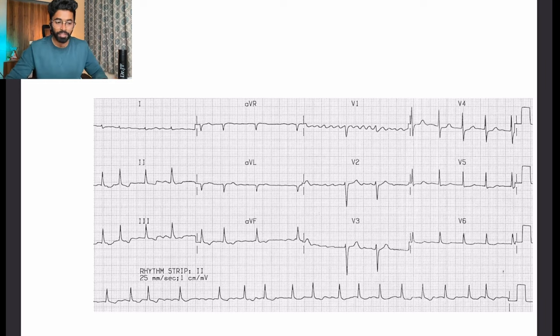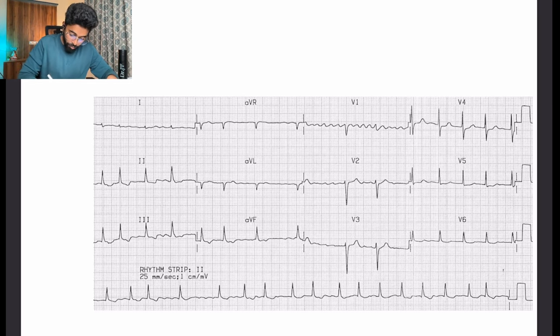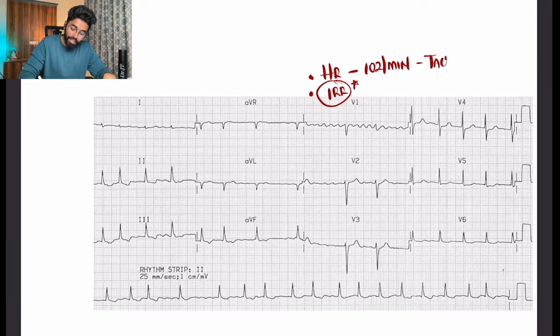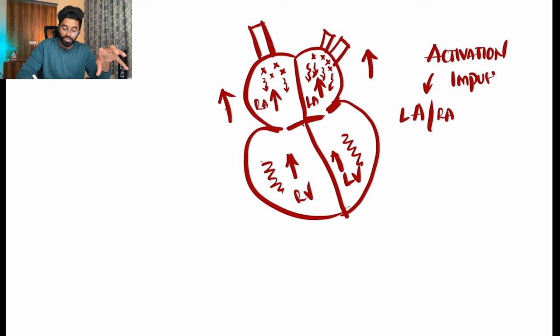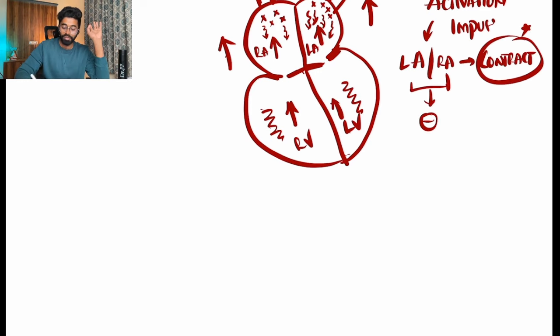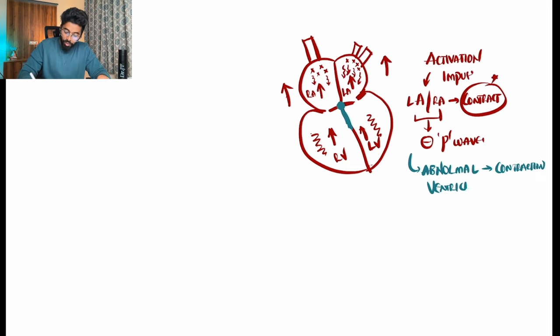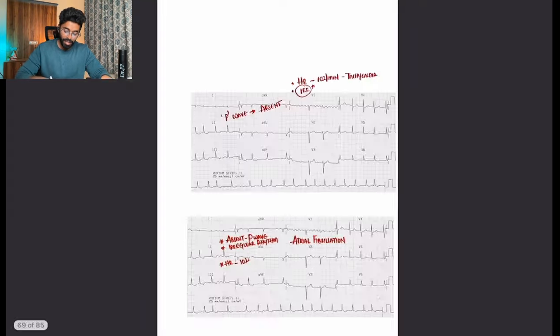For this arrhythmia ECG: heart rate indicates tachycardia, the rhythm is irregular, and there is no P wave. Whenever there is a problem in the valves or ventricles, pressure increases in the ventricles and also in the right and left atrium. Automated electrical foci present in the atria send activation impulses causing both atria to lose their ability to contract. With no atrial contraction, there is no P wave. This abnormal contraction results in irregular rhythm with tachycardia — this is atrial fibrillation.